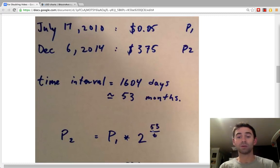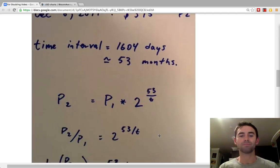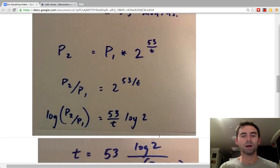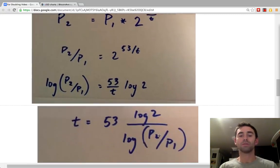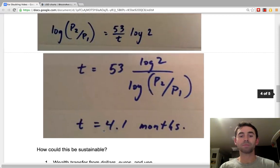Now we've got to do some rearrangement. Solve for t: divide both sides by P1, take the log, rearrange it, you get this. Plug in the numbers, you get doubling time for the price of Bitcoin is 4.1 months.